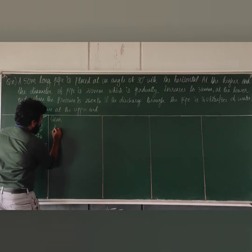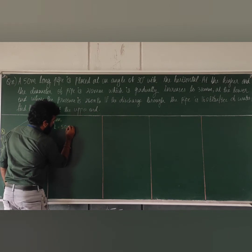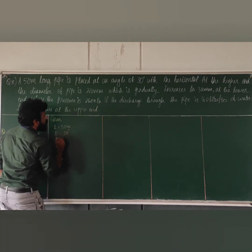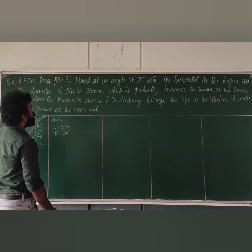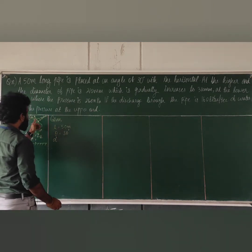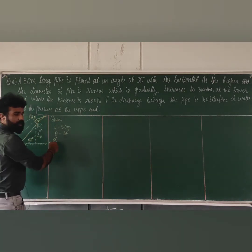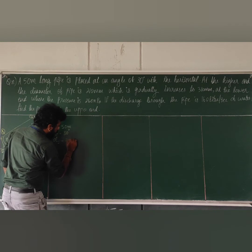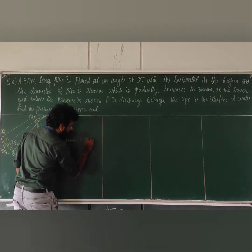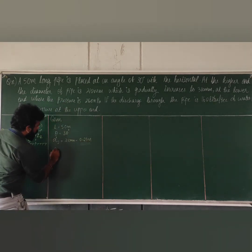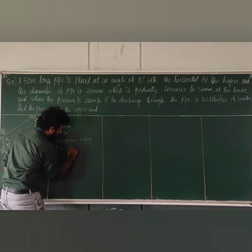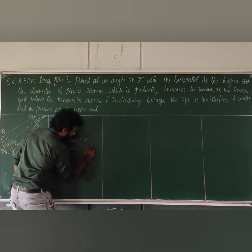The given data: pipe length is 50 meters. Angle theta is equal to 30 degrees. Diameter D2 is equal to 210 mm, that is 0.21 meters. Similarly, D1 is 310 mm, that is 0.31 meters.